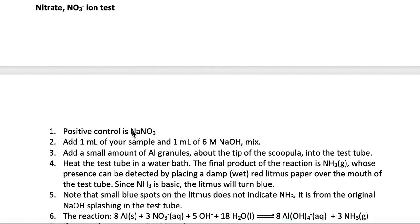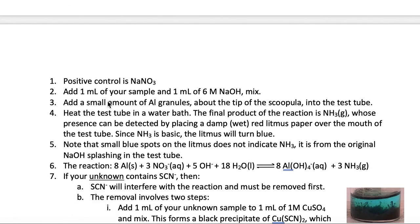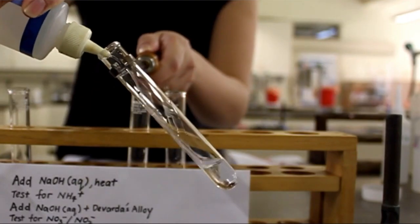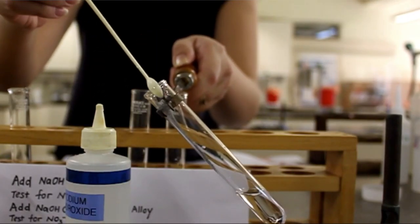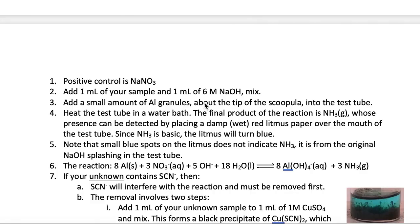The last test here is for the nitrate ion, which uses sodium nitrate as the positive control. Here, you're going to add one milliliter of your sample with sodium hydroxide and a scoopula of aluminum powder or aluminum granules. And then what you're going to do is put the test tube inside a water bath and heat it.